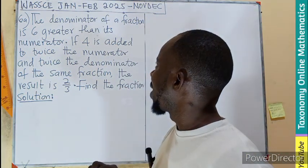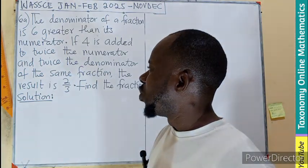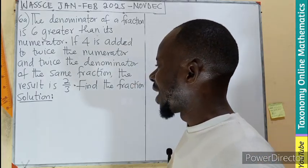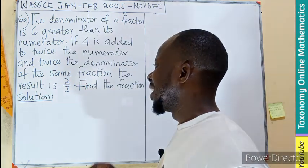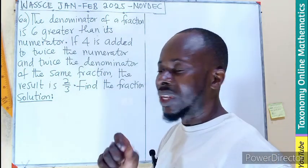The denominator of a fraction is 6 greater than the numerator. If 4 is added to twice the numerator and twice the denominator of the same fraction, the result is 2 on 3. We need to know what the fraction is.